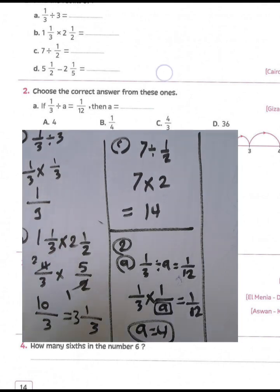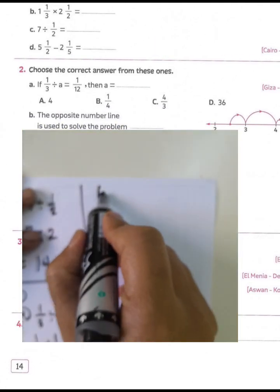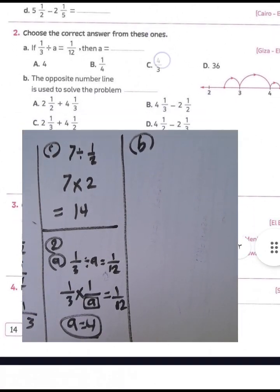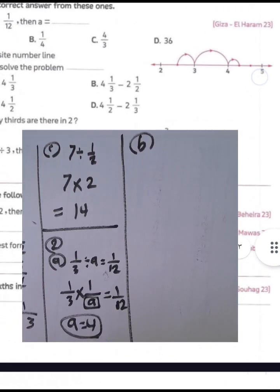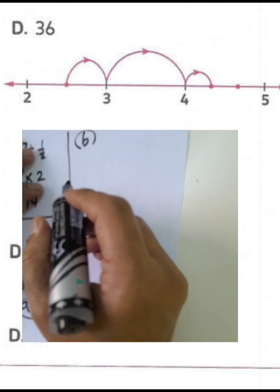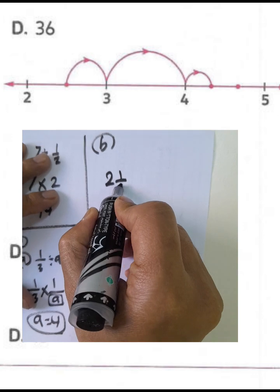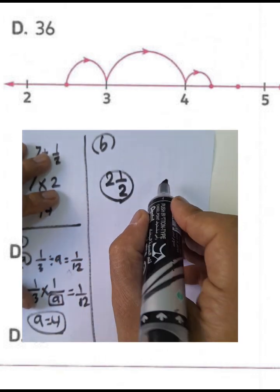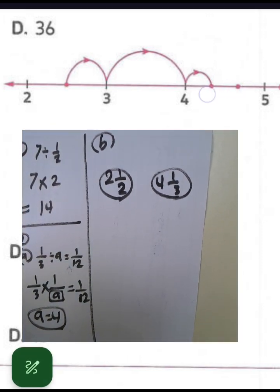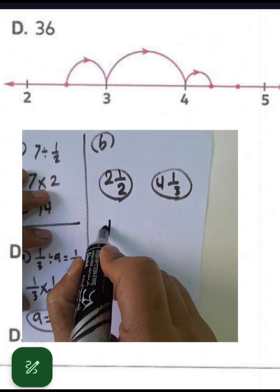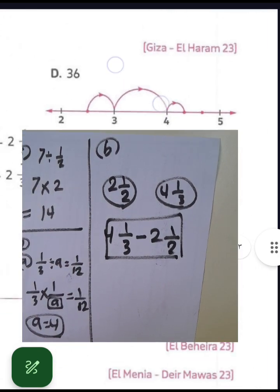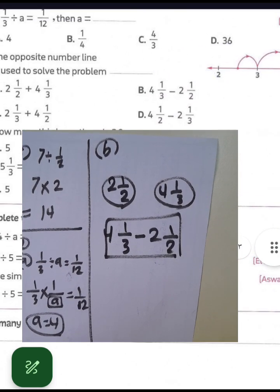Letter B uses a number line to solve the problem. The number line starts at two and a half and ends at four and one-third, with three equal parts marked. Since the point lies at four and one-third, we find the answer by calculating four and one-third minus two and a half.